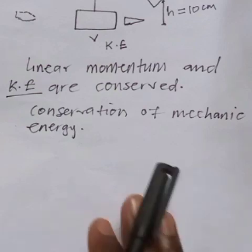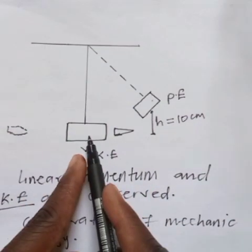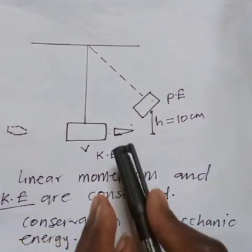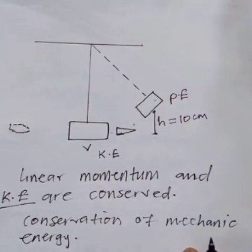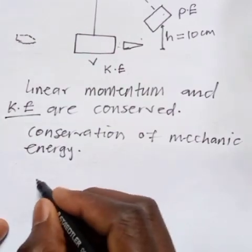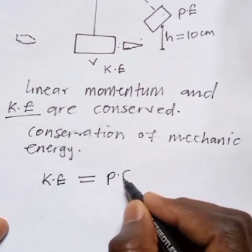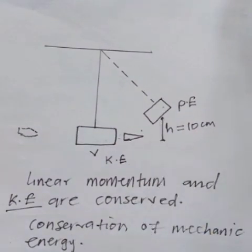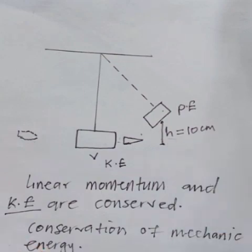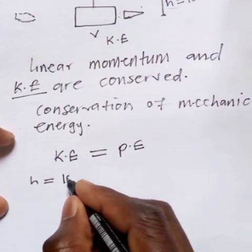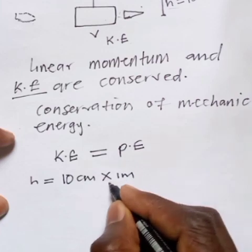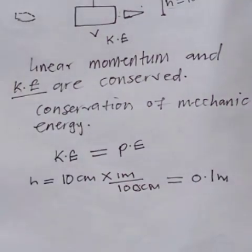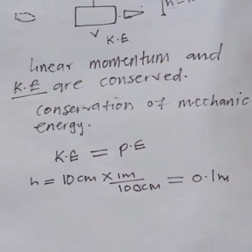We start with conservation of mechanical energy to find the final velocity of the block. Since the bullet came out, they don't have the same velocity. We say kinetic energy at the bottom equals potential energy at the top. The height given is in centimeters, so we convert: h = 10 cm × (1 m / 100 cm) = 0.1 meters. This is the height to which the block rises.